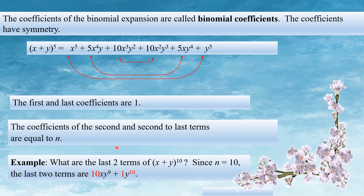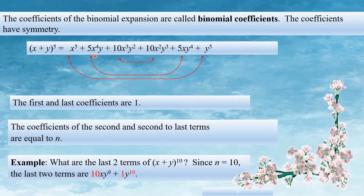What are the last two terms of x plus y all raised to 10? We have the last two terms: x raised to 10, and the coefficient of the first term starting is n = 10, then coefficient of second term is 10 and the first is 1. Then x raised to 5 and x raised to 10.